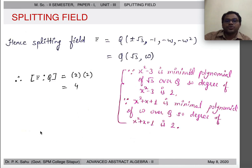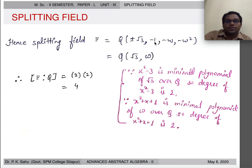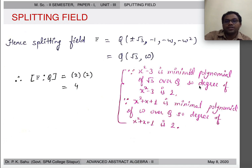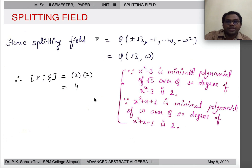The splitting field is obtained by adjoining ±√3, -1, -ω, and -ω² to ℚ. Since -1 = -ω³, all roots can be obtained using √3 and ω. So we obtain the splitting field by adjoining √3 and ω to ℚ. Now x² - 3 is the minimal polynomial of √3 over ℚ, with degree 2, and x² + x + 1 is the minimal polynomial of ω over ℚ, also with degree 2. Therefore the degree of the splitting field F over ℚ is 2 × 2 = 4.